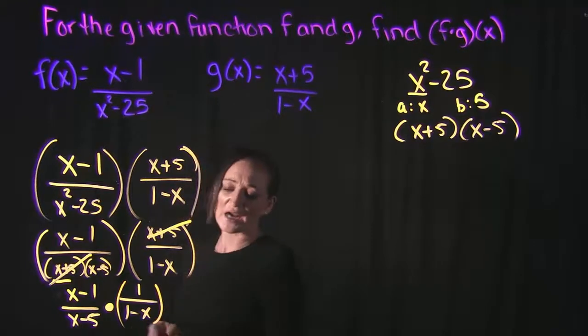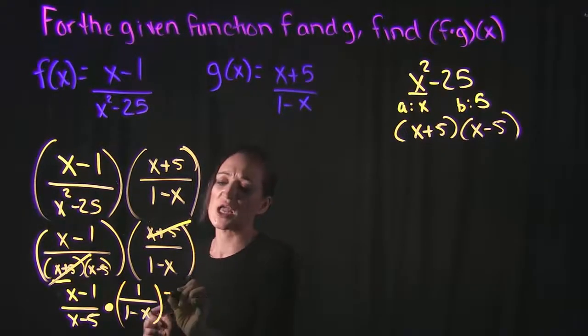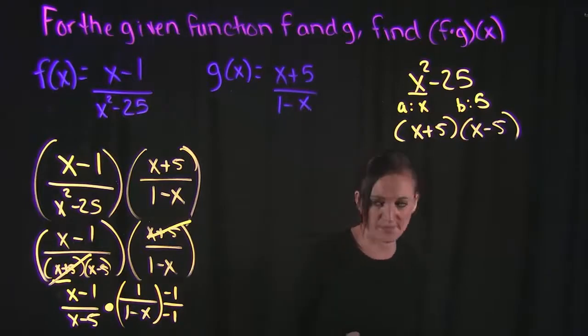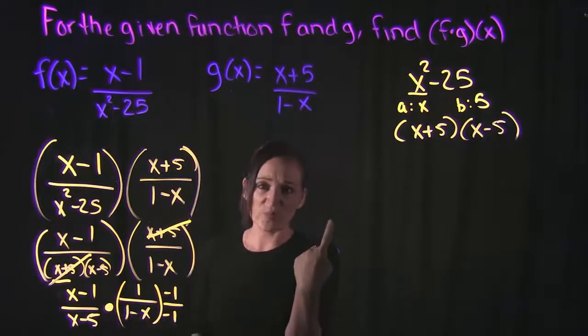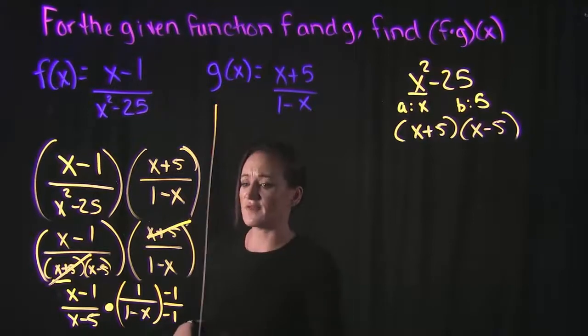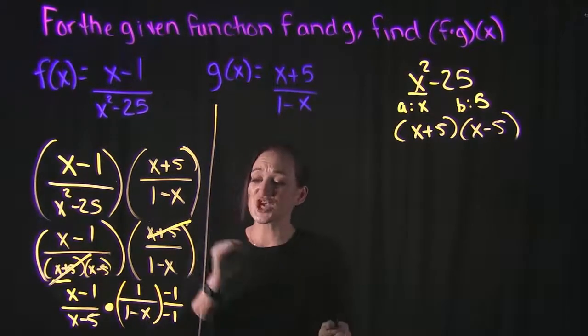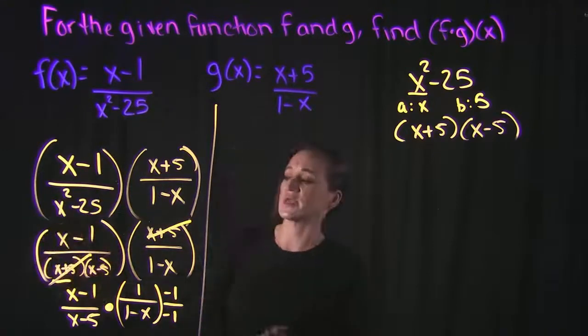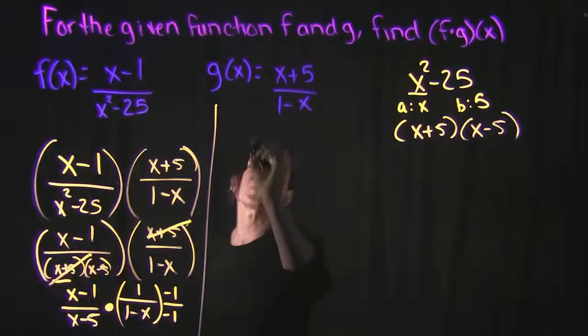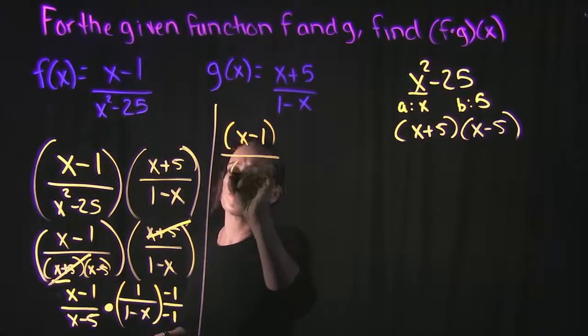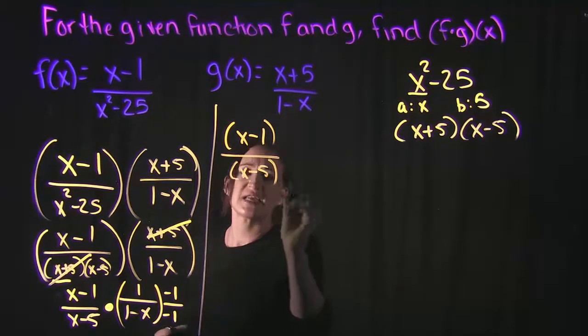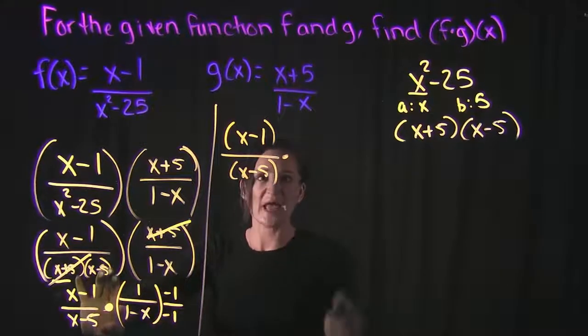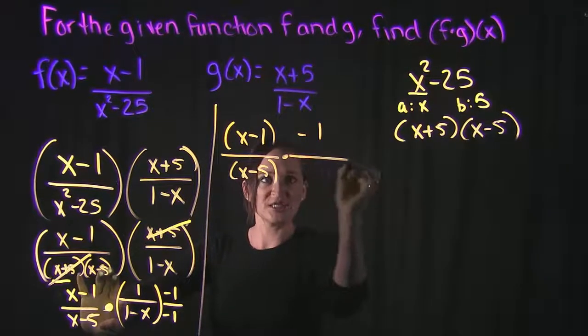I can take this fraction and only this fraction and multiply it by negative 1 over negative 1. That's technically just multiplying it by 1, which isn't going to change the value of it. But it is going to change the signs, which hopefully will then allow me to cancel it with that x minus 1 up here. So, the x minus 1 over the x minus 5 is going to stay the same. We're just multiplying everything on the right side here by negative 1. So, it's just going to change the sign of everything.